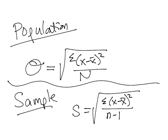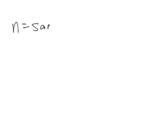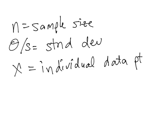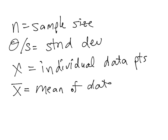Now let's talk through the variables we're going to be using. N is the sample size, whether that's a population or a sample. We'll be using either sigma or S, which stands for the standard deviation for population or sample respectively. The x is an individual data point — each piece of data within our data set is recognized as an individual data point, noted by x. X-bar is the mean of our data set.